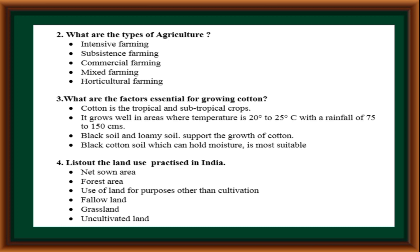List out the land use practiced in India: net sown area, forest area, use of land for purposes other than cultivation, fallow land, grassland, uncultivated land.